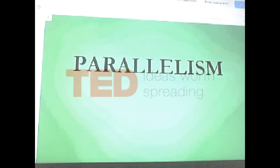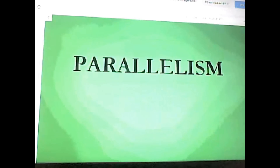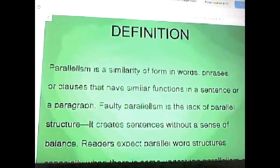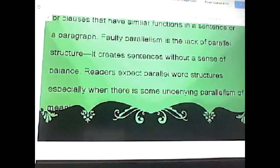Now we will be discussing parallelism. Hi guys, this is Andrew Ortiz, and I'm going to be explaining parallelism. I'll go over the definition, some examples, and when it is used incorrectly. Parallelism is a similarity of form in words, phrases, or clauses that have similar functions in a sentence or paragraph. Faulty parallelism is the lack of parallel structure — it creates sentences without a sense of balance. Readers expect parallel word structures, especially when there is some underlying parallelism of meaning.